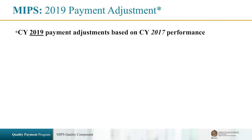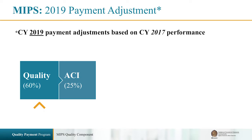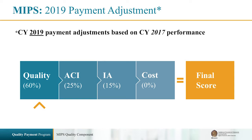Please note that I'm going to focus on the requirements for individual providers. As a reminder, the various components that make up the MIPS final score are: quality, which is the heaviest weighted component at 60%; ACI, or Advancing Care Information, which is 25%; Improvement Activities, which are 15%; and Costs, which will be weighted at zero for 2017. It is important to note that your payment adjustment will be applied in 2019, based on your performance in 2017.